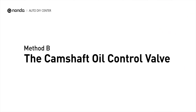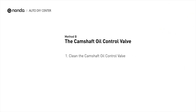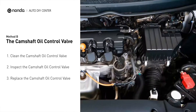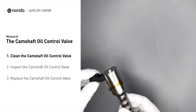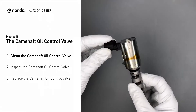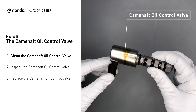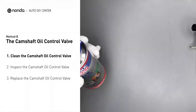Method B: The Camshaft Oil Control Valve. The camshaft oil control valves are usually located in cars that have engines with variable valve timing systems in them. First, carefully remove the camshaft oil control valve from the engine.